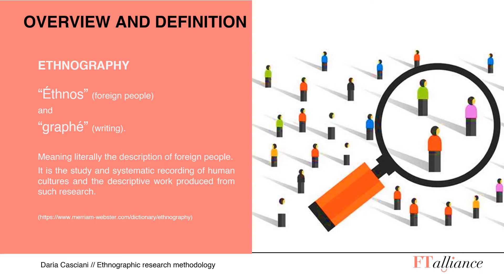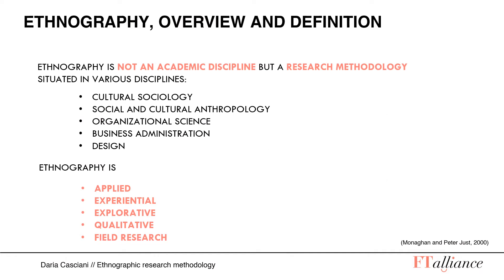The ethnography methodology origin lies in the late 19th century, when academics ventured out into the colonies to study the culture, human behaviors, and social relations. The standpoint of ethnography is that researchers are supposed to see things from the point of view of their subjects of study, presupposing a lack of familiarity between the ethnographer and the people and life worlds they investigate. Ethnography is not an academic discipline, but a research methodology situated in various disciplines such as cultural sociology, social and cultural anthropology, organizational science, business administration, and design.